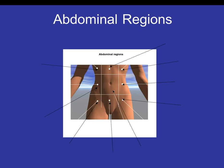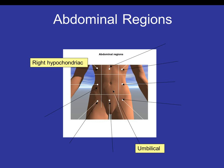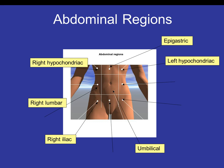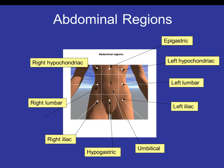We also have abdominal regions. The middle section is the umbilical region. Top right is the right hypochondriac, below that is the right lumbar, then the right iliac. The very top middle is the epigastric — 'epi' means upon, 'gas' means stomach, so upon the stomach. Far left is the left hypochondriac, followed by the left lumbar and left iliac. The last region is the hypogastric — 'hypo' means below or under the stomach. Use your medical term knowledge to identify where these regions are located.